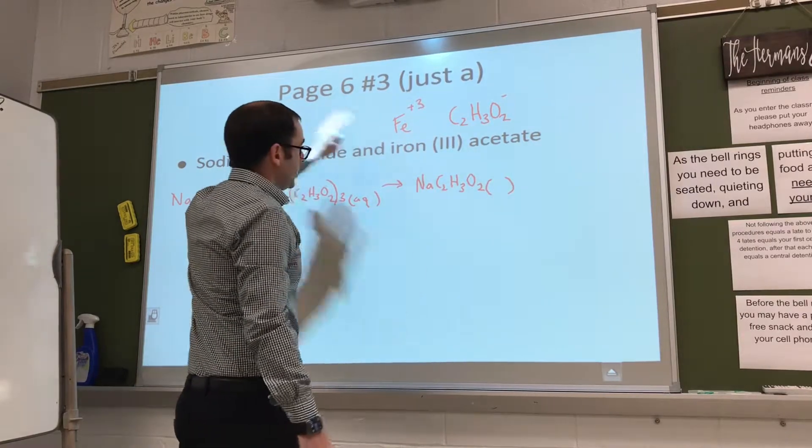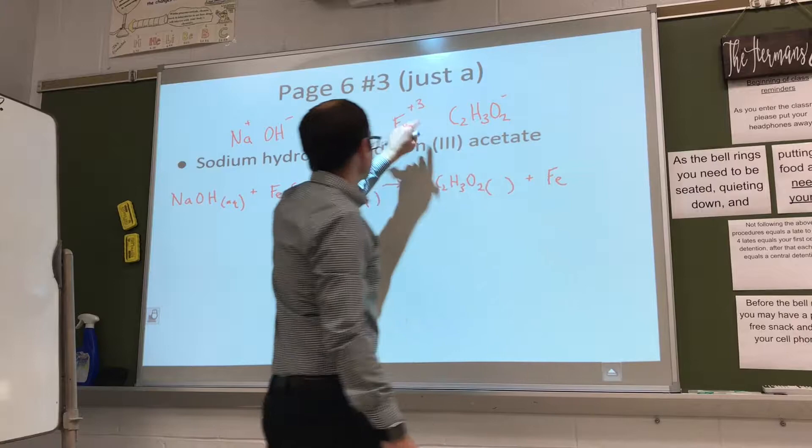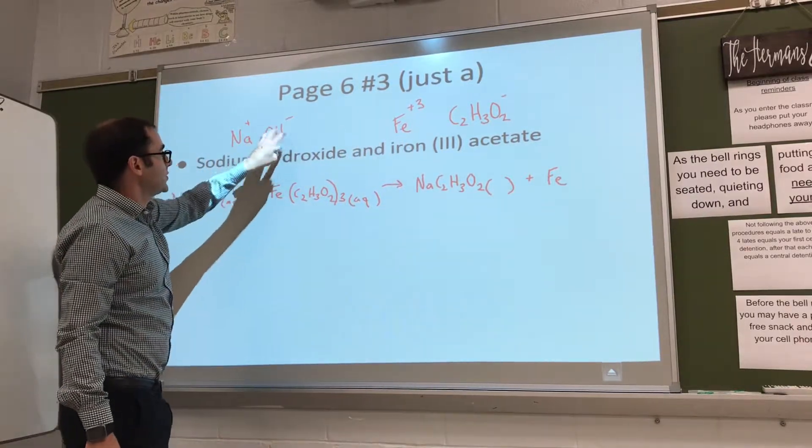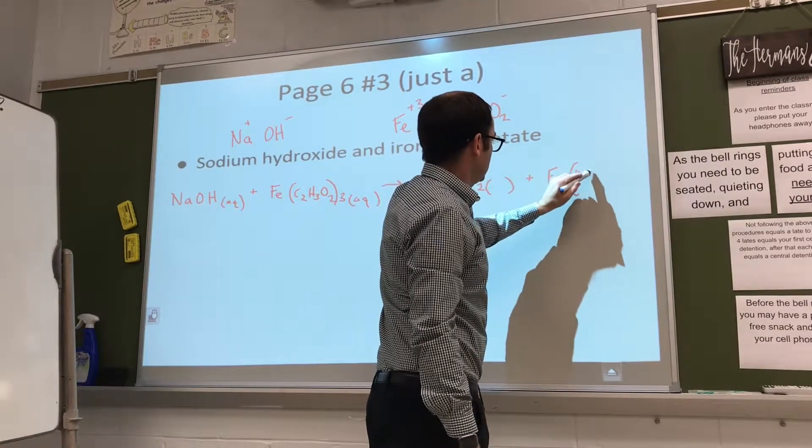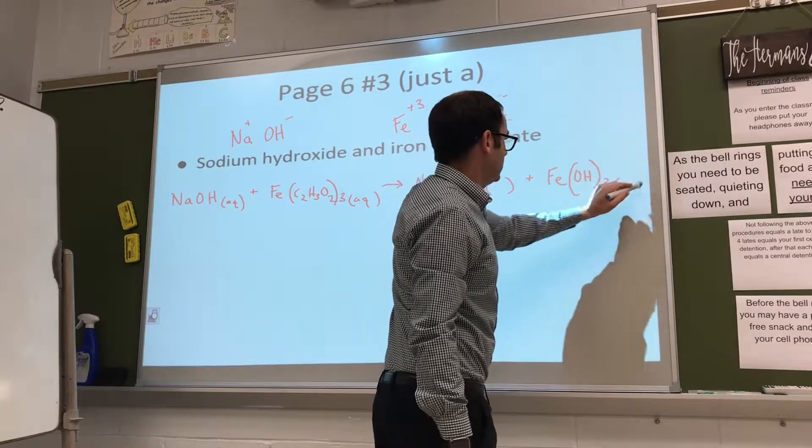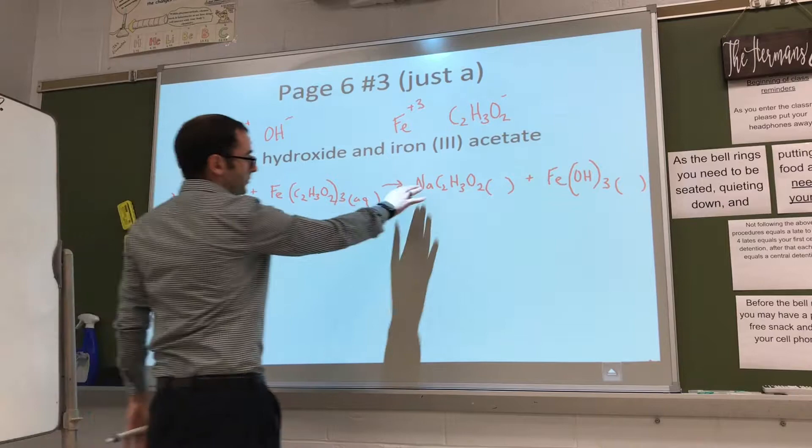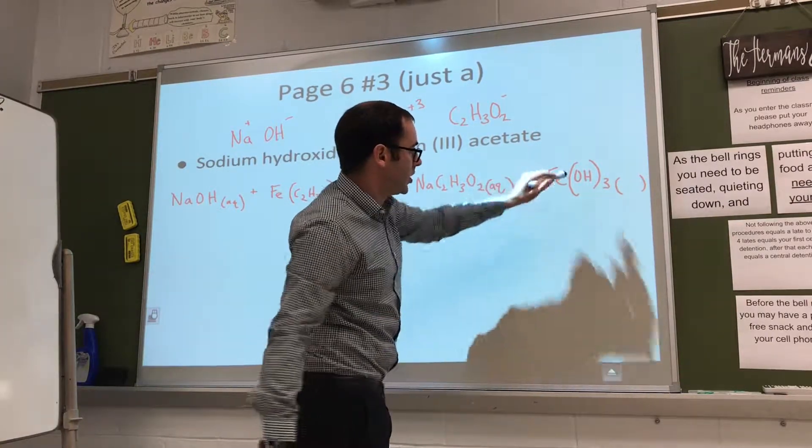All right, plus Fe. Now iron is plus three, OH is minus one, so we need three of these OHs. So Fe(OH)3. We'll have to check that. Now because we know sodium is always aqueous, this one's going to be aqueous, and then we just have to check the chart.